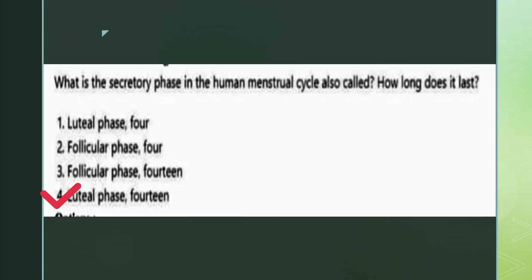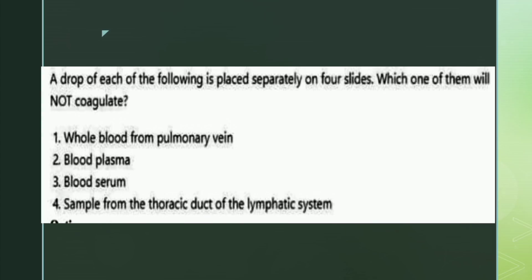The next question: a drop of each of the following is placed separately on four slides — which one will not coagulate? The options are: whole blood from pulmonary vein, blood plasma, blood serum, and a sample from the thoracic duct of the lymphatic system. The right answer is option three: blood serum, because it lacks a clotting factor.